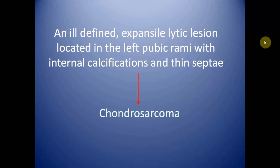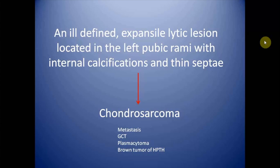This is the case of chondrosarcoma. The differential diagnosis includes metastasis, giant cell tumor, plasmacytoma, and brown tumor of hyperparathyroidism. Metastasis is excluded based on absence of other skeletal lesions and no known primary. Giant cell tumor can be kept as a differential. Plasmacytoma presents as a solitary osteolytic lesion but would not have internal calcification. Brown tumor of hyperparathyroidism is excluded based on absence of other skeletal features of hyperparathyroidism.